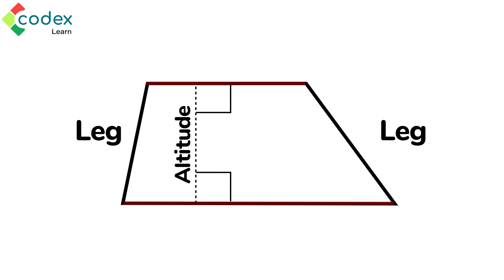The parallel sides are called the bases. The distance at right angles from one base to the other is called the altitude.